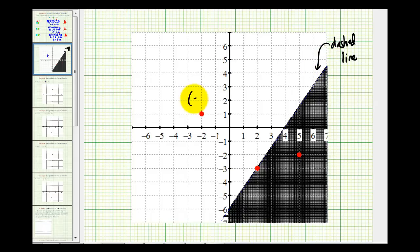Here's the point negative 2, 1 that did not satisfy the inequality. Here's the point 5, negative 2 that did. And because this line was dashed, this point on the border did not satisfy the inequality. This was the point 2, negative 3.